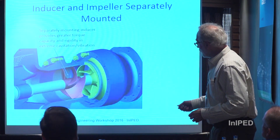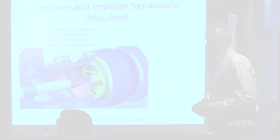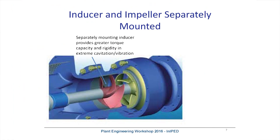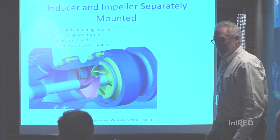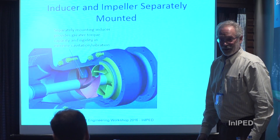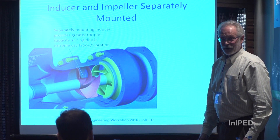In those cases you want to move to an inducer keyed directly onto the shaft, giving you the full torque-carrying capability of the shaft. Using a vertical turbine pump as an example, the inducer gets keyed to the shaft — very high torque capability — and it's retained so it's not going anywhere until there's no more vane left to pump.